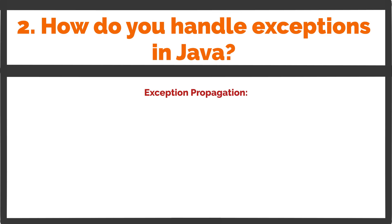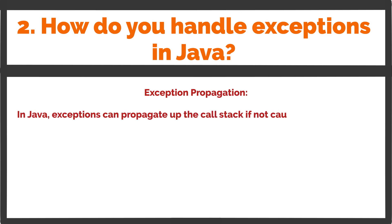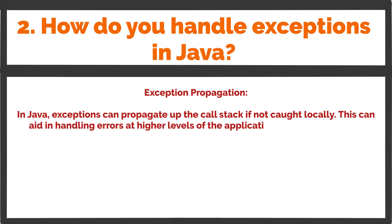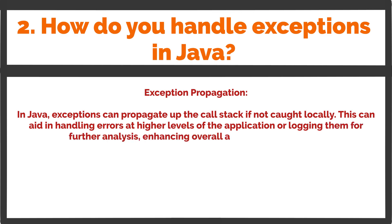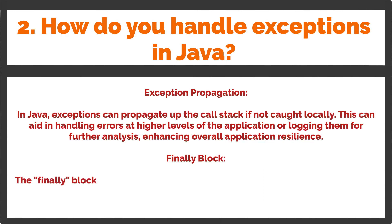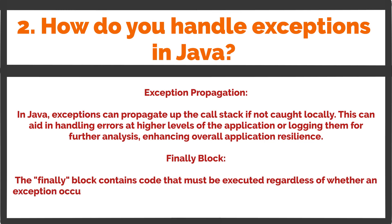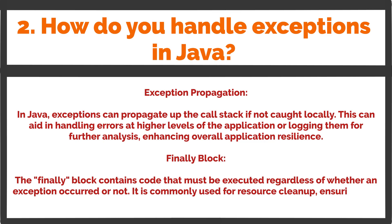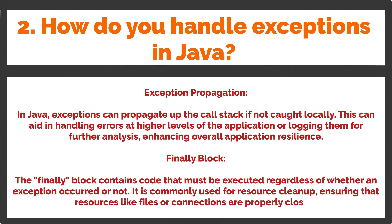In Java, exceptions can propagate up the call stack if not caught locally. This can aid in handling errors at higher levels of the application or logging them for further analysis, enhancing overall application resilience. The finally block contains code that must be executed regardless of whether an exception occurred or not. It is commonly used for resource cleanup, ensuring that resources like files or connections are properly closed.